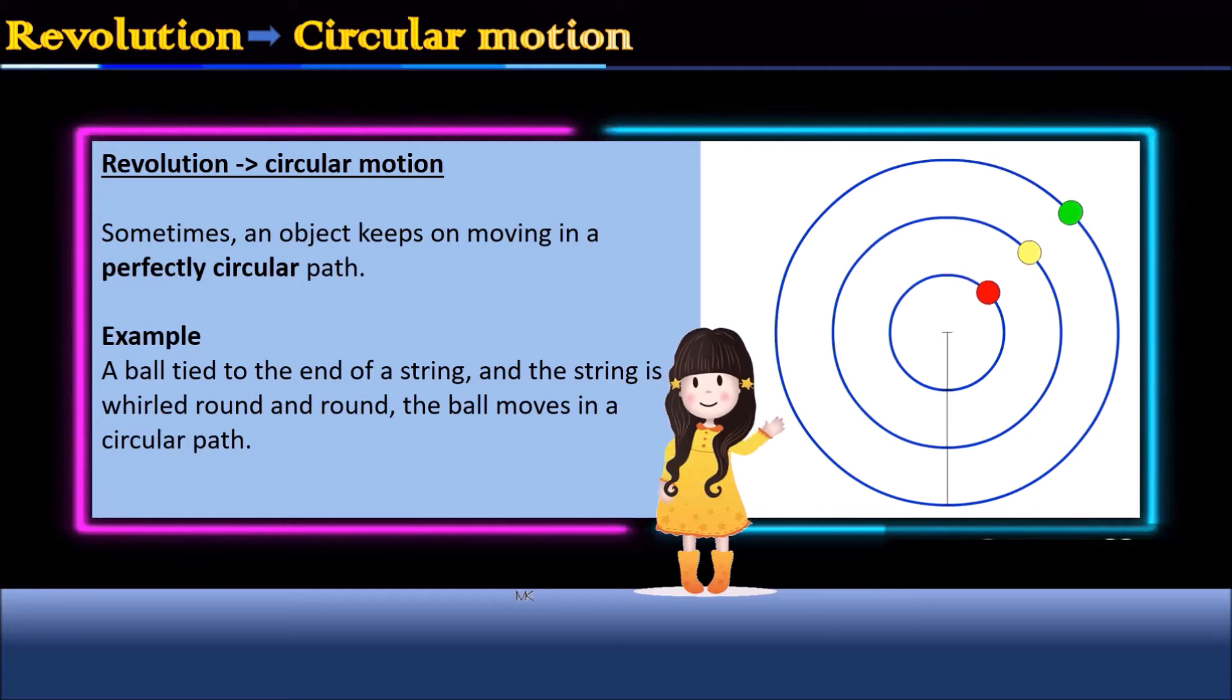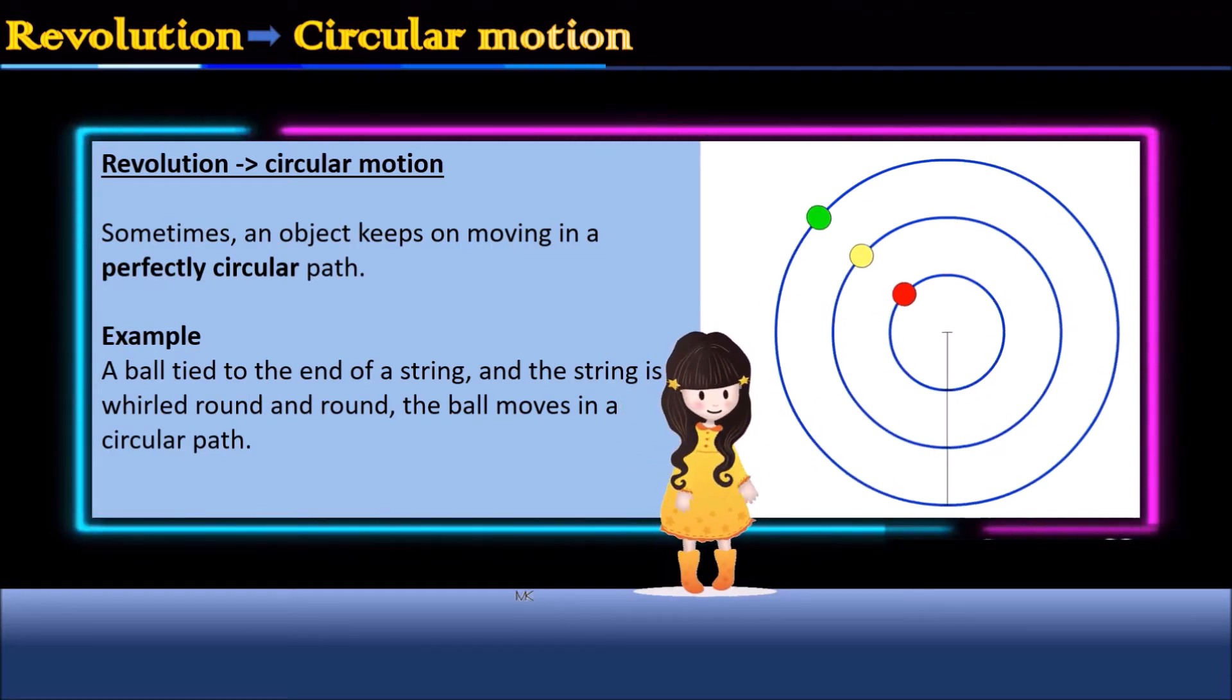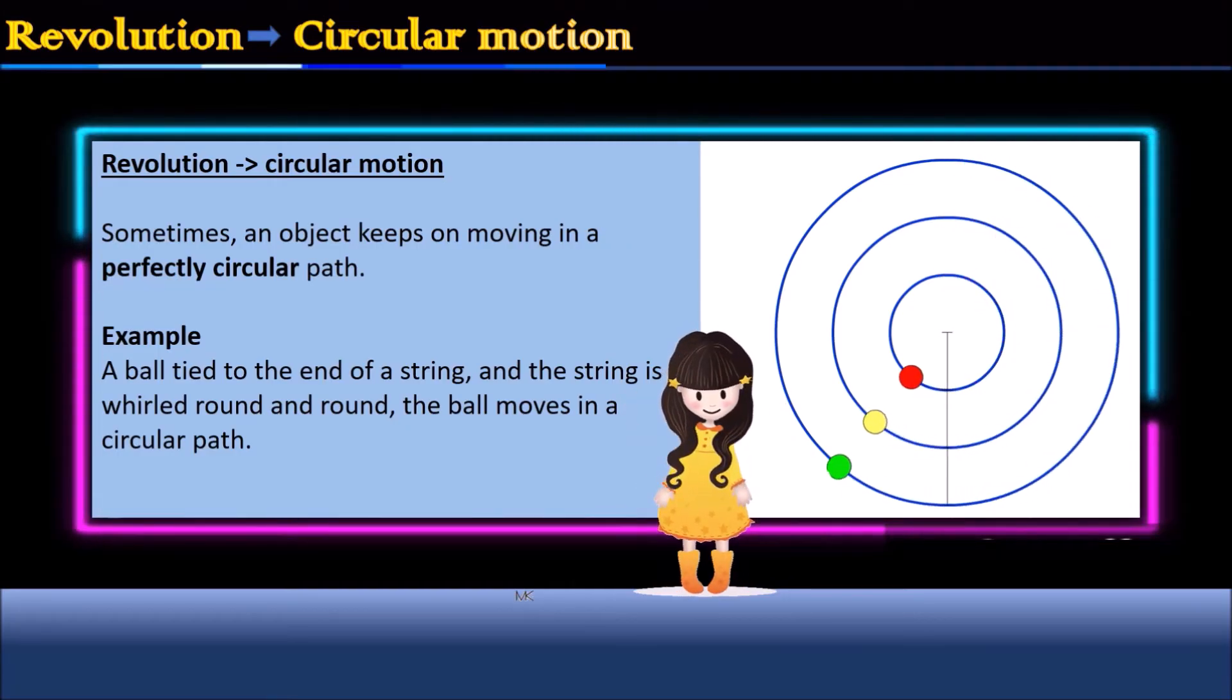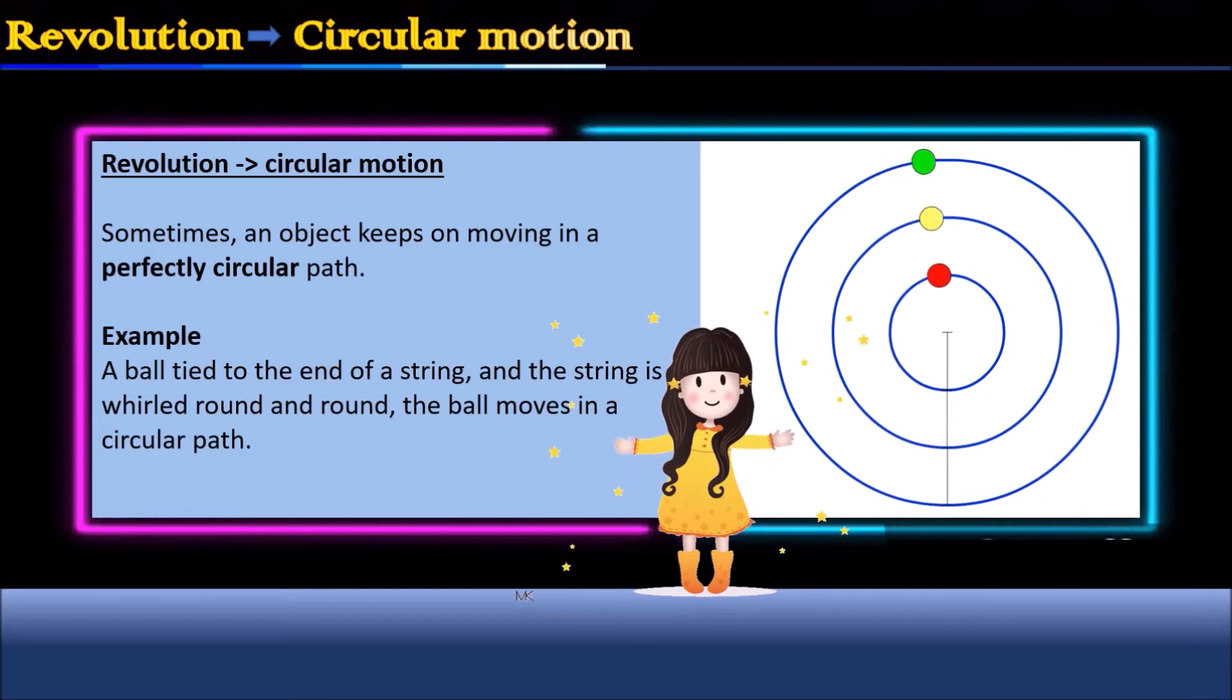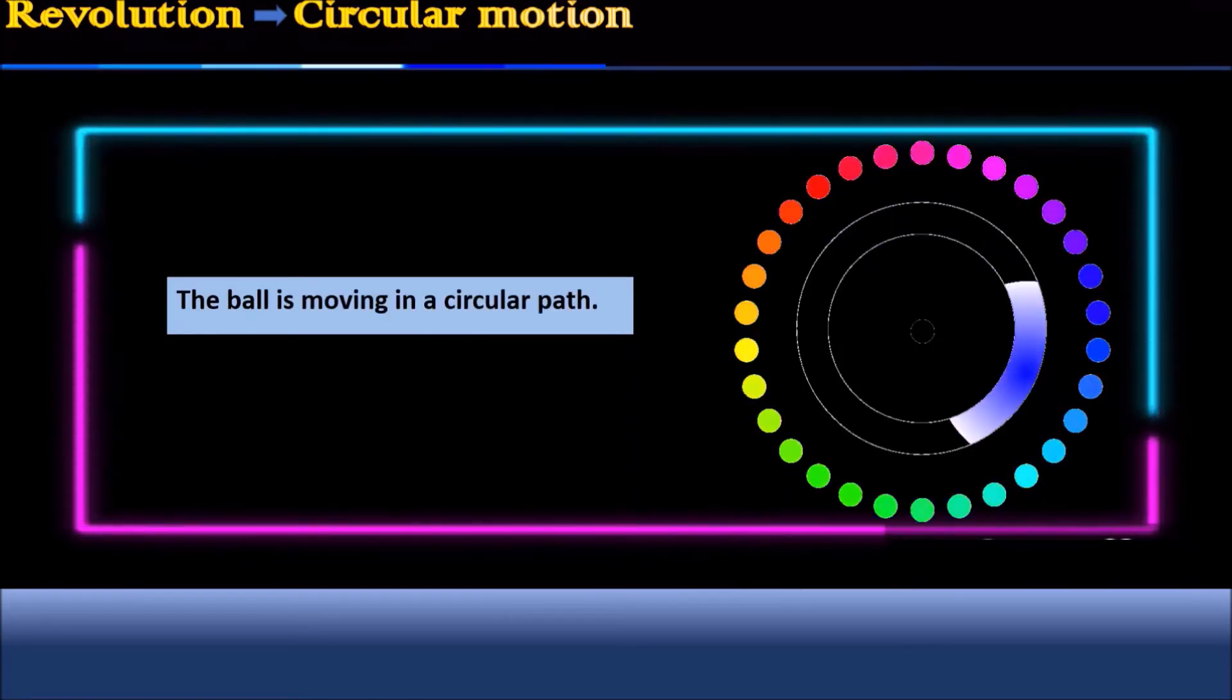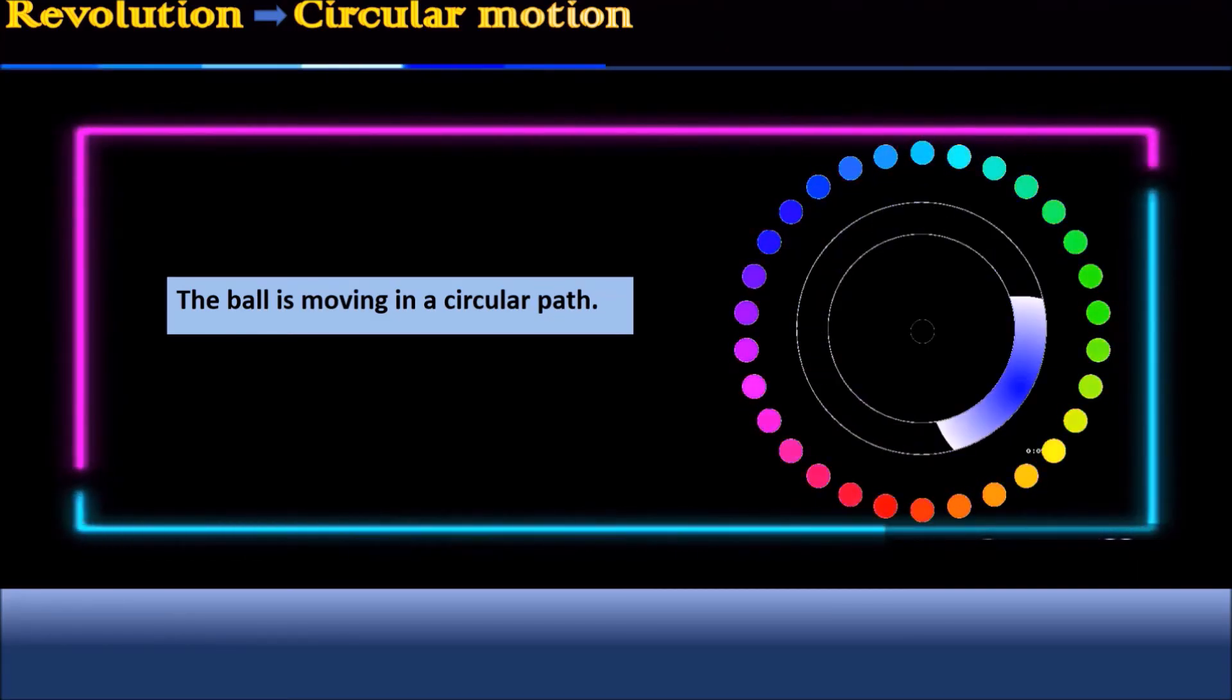Sometimes, an object keeps on moving in a perfectly circular path. For example, if a ball is tied to the end of a string and the string is whirled round and round, the ball moves in a circular path. We then call such a motion as a circular motion.